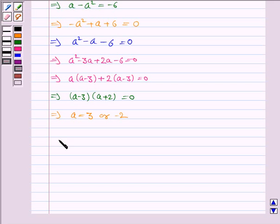Now if a is equal to 3 then b is equal to 1 minus 3, that is minus 2. And if a is equal to minus 2, b is equal to 1 minus minus 2, that is 3.